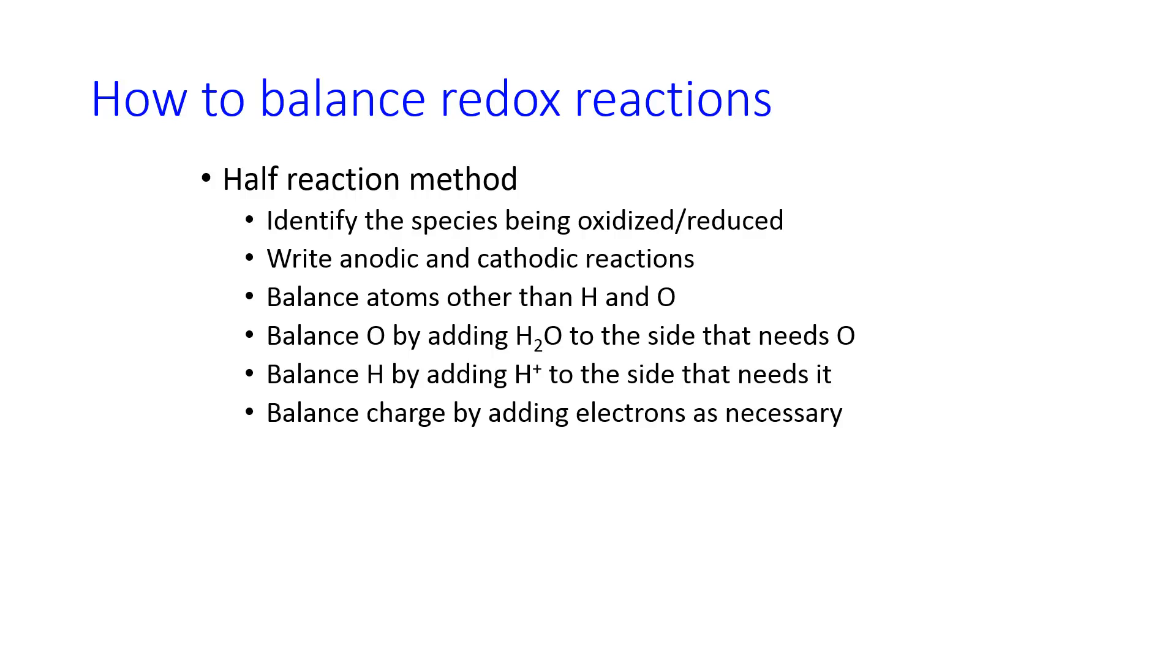For a redox reaction, we also have to worry about balancing with respect to charge. And so we add electrons to the side that needs them in order to have the charges be the same on each side of the half-reaction. They don't necessarily need to be zero, but they need to be the same. Since we can't create or destroy electrons over the course of a redox reaction, before we add the two half-reactions back together, we need to account for the fact that there are different numbers of electrons on each side. In other words, when we add the equations back together, we want the electrons to cancel. So we need to balance the number of electrons between the two half-reactions by multiplying each one by the correct factor.